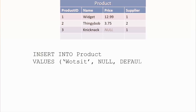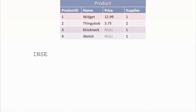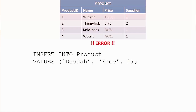You can explicitly insert null or default values. If you use the wrong data type — for example inserting the string 'free' into a decimal price column — you get an error because the data type is wrong. Similarly, if you try to insert null into a column that doesn't support nulls, you get an error. These constraints enforce data integrity, preventing things like inserting products without suppliers.